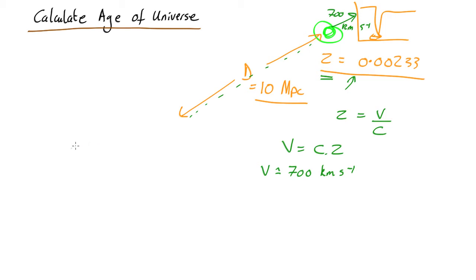What we need to do is calculate how long it would take traveling at a speed of 700 kilometers per second to go 10 megaparsecs. The time is just going to be equal to the distance over the speed or velocity, just like it is for anything on Earth.